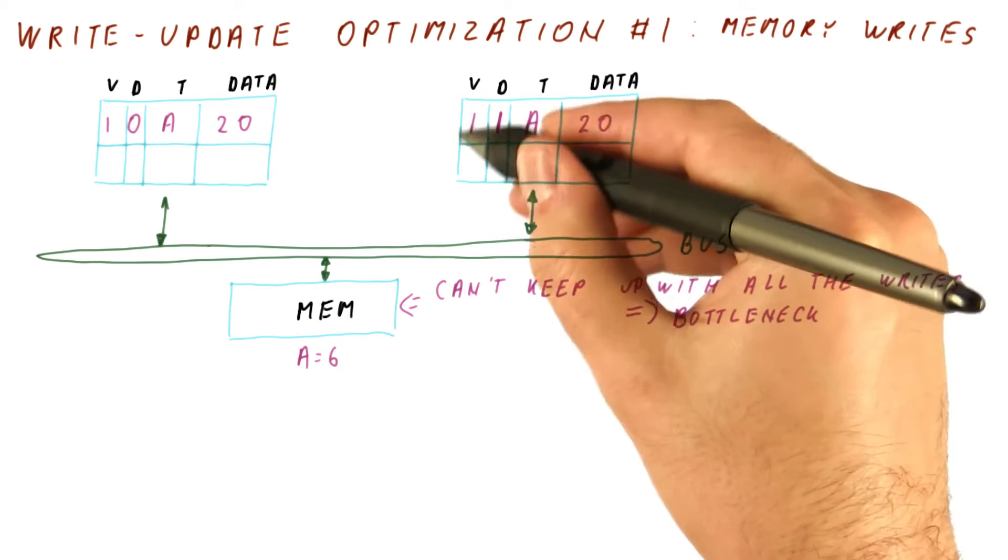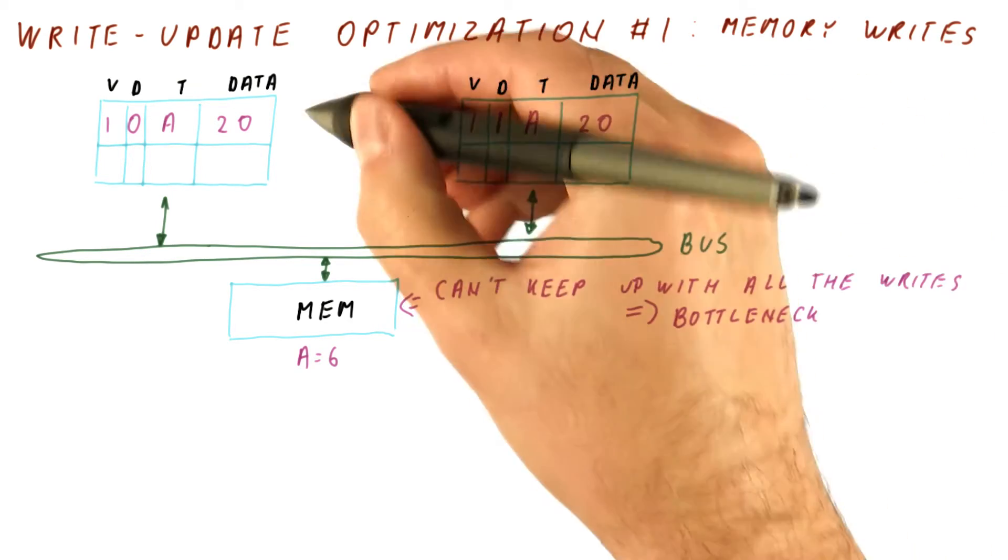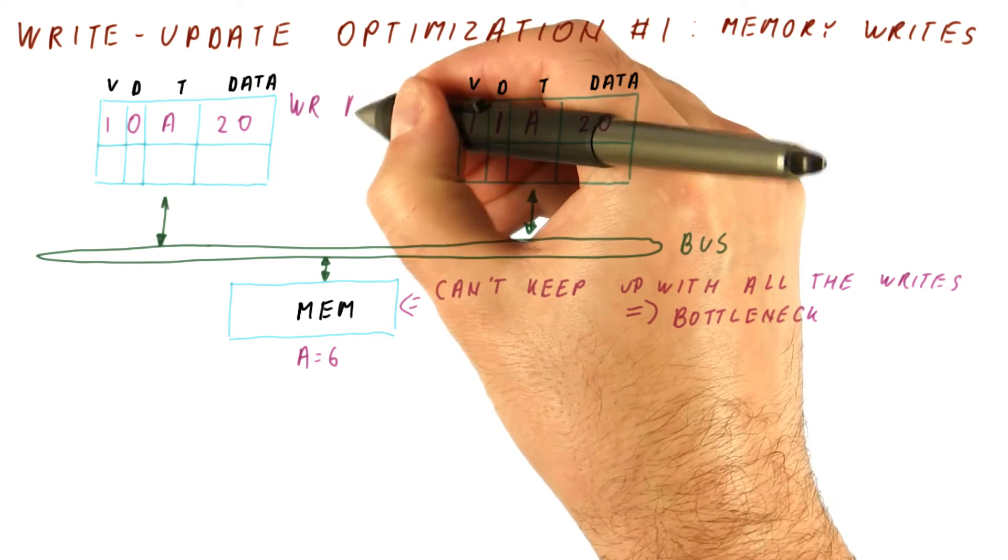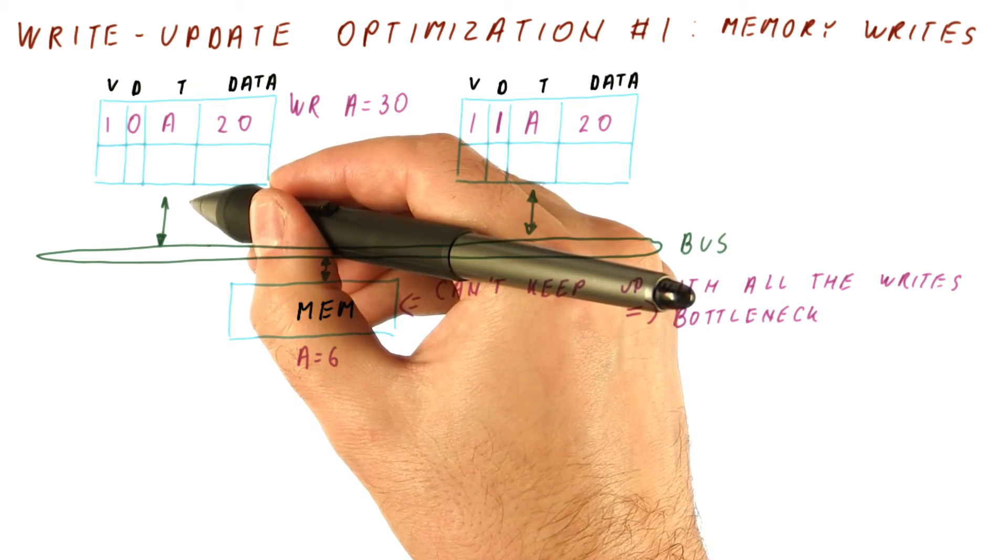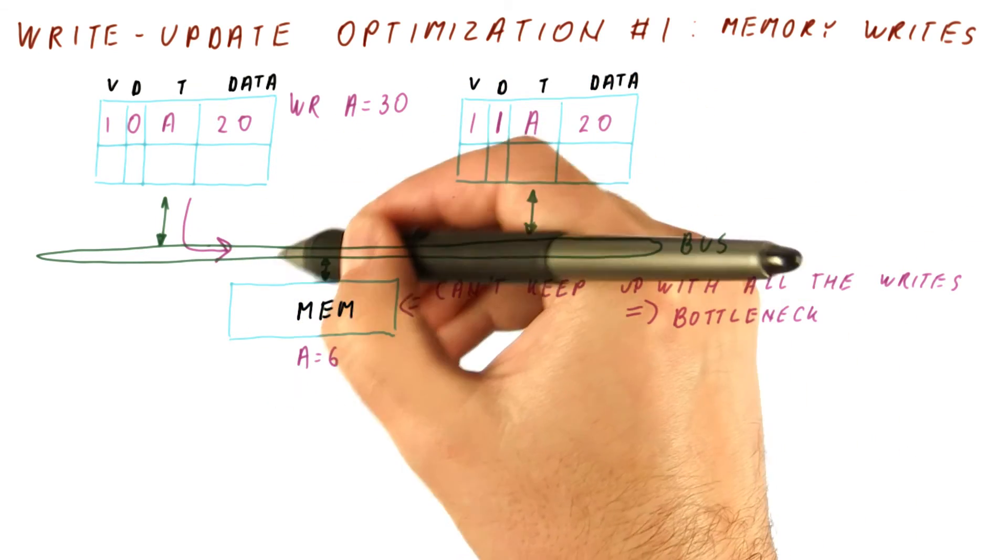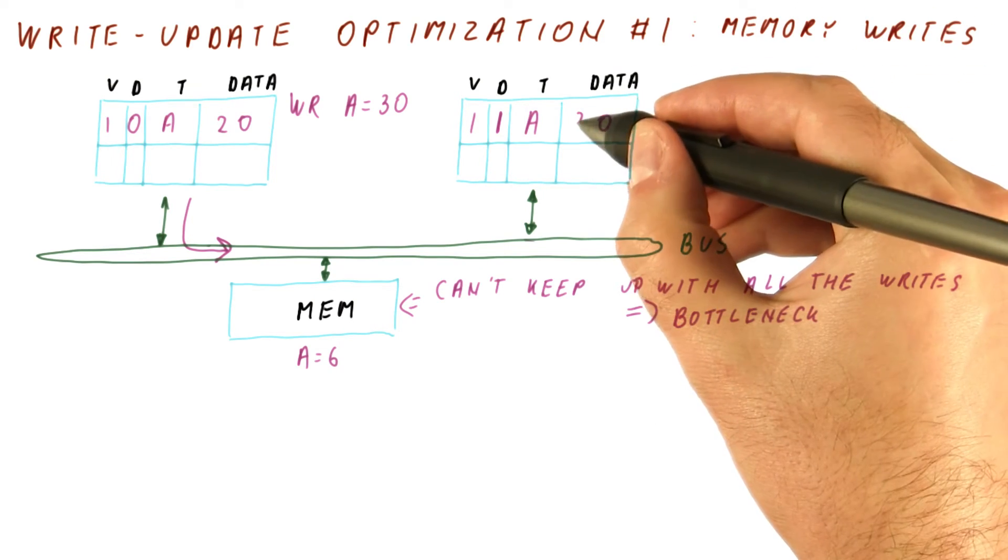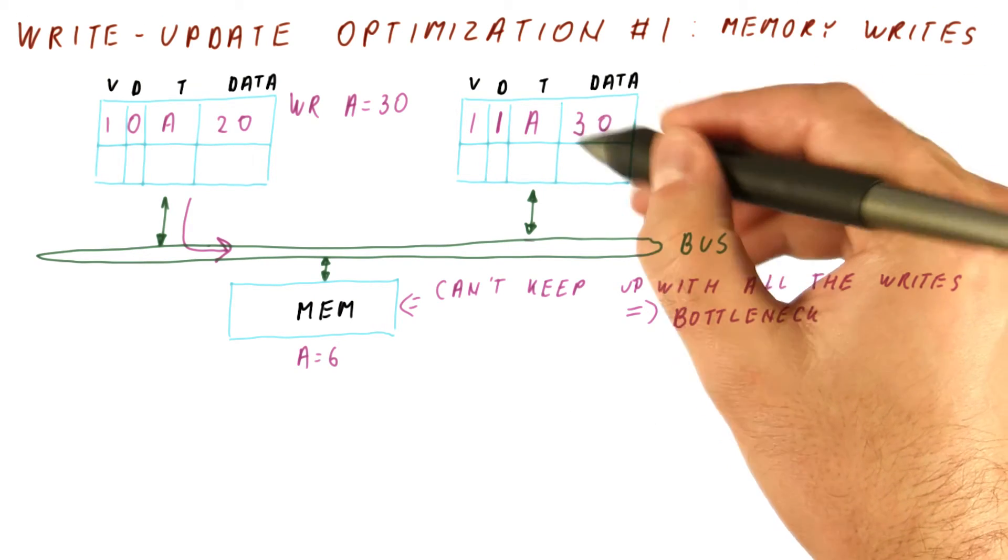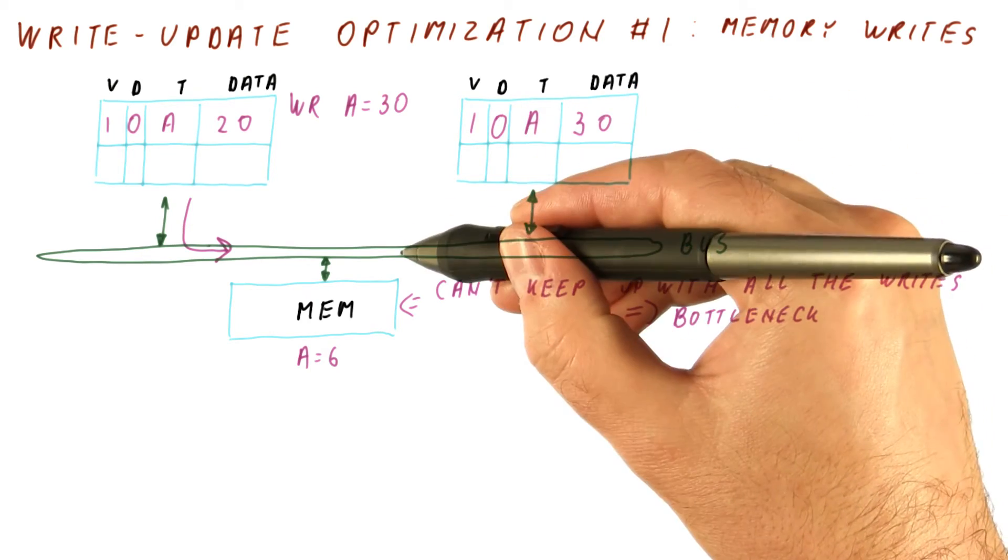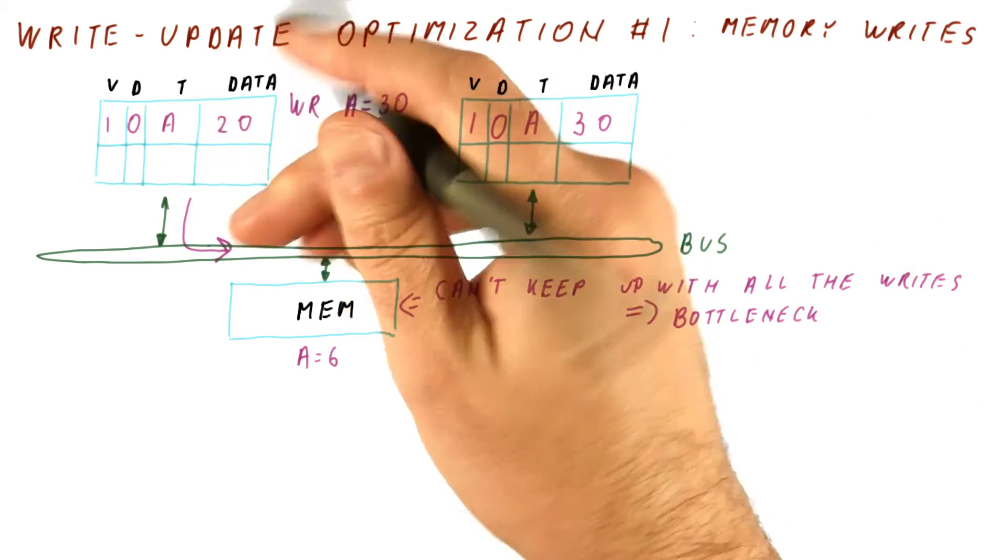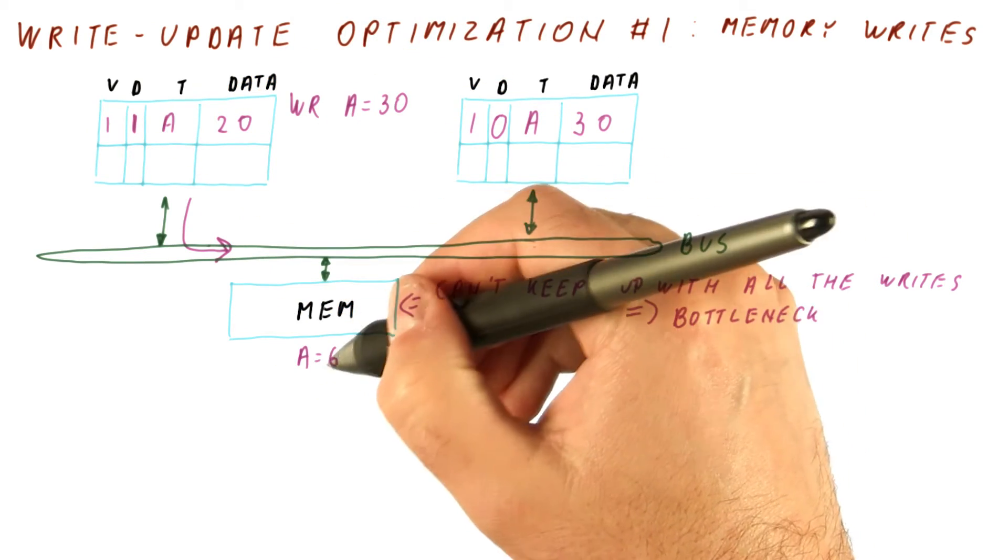Another interesting situation here is what happens if we have the block dirty in this cache, and now this cache writes, let's say, 30 to A. In that case, this cache broadcasts the write. This cache snoops the write, puts 30 in its cache. Now this cache is no longer responsible for writing back to memory because the new writer takes that responsibility and the memory still doesn't get updated.